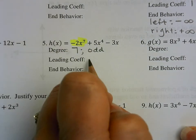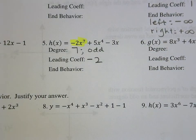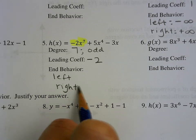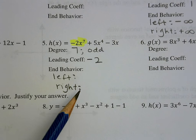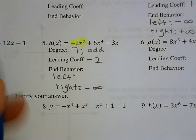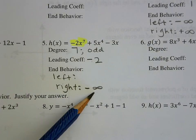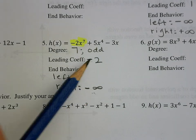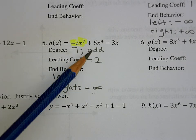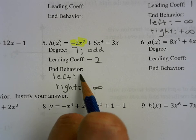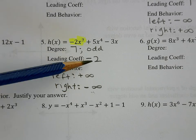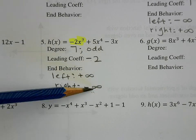My leading coefficient — the number I'm multiplying by — is negative 2. For the end behavior, the right ends the way the leading coefficient ends. Because it's negative, the right is going to go to negative infinity. For the left side, because it's an odd degree, the ends go in opposite directions. So opposite of negative infinity will be positive infinity. An odd degree means opposite directions; the leading coefficient tells me how the right side goes — negative, so negative.